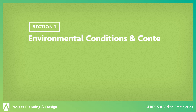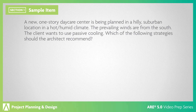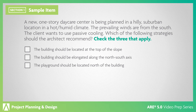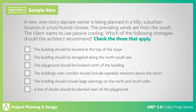In the Environmental Conditions and Context section, you'll use the site information gathered in the Programming and Analysis phase to plan the site and environmental aspects of a project. Let's look at a sample question. A new one-story daycare center is being planned in a hilly suburban location in a hot humid climate. The prevailing winds are from the south. The client wants to use passive cooling. Which of the following strategies should the architect recommend? Check the three that apply: the building should be located at the top of the slope; the building should be elongated along the north-south axis; the playground should be located north of the building; the building's main corridor should include operable transoms above the doors; the building should include large openings on the north and south sides; a line of shrubs should be planted west of the playground.